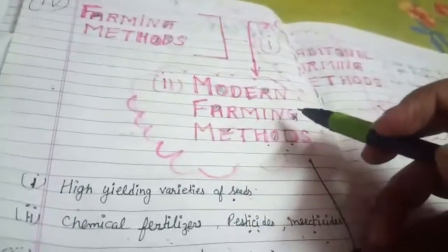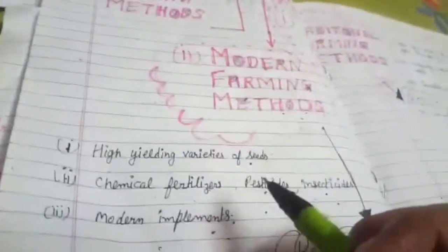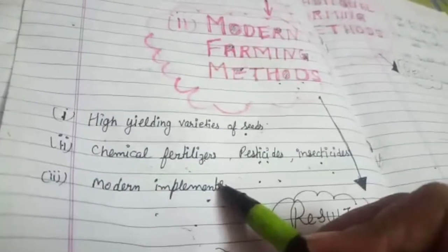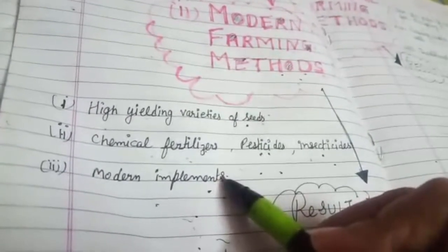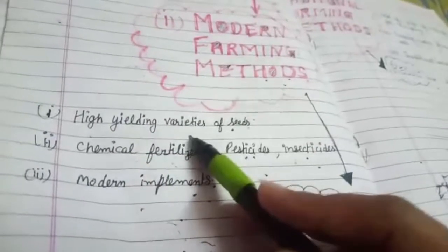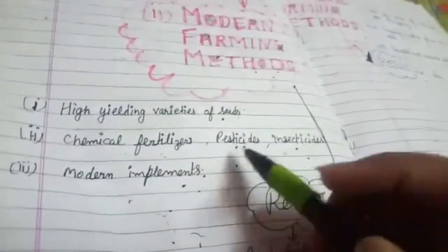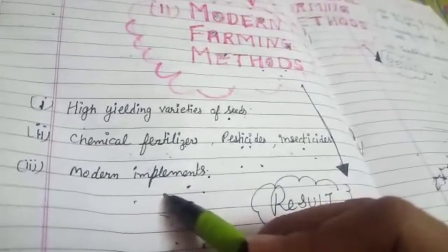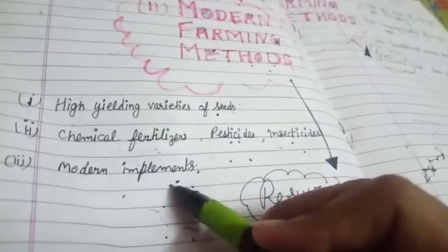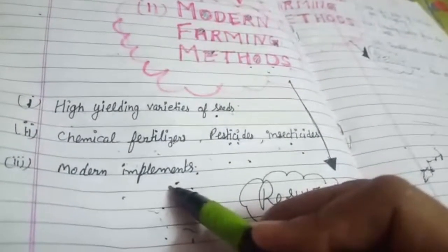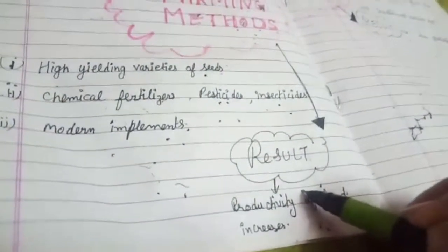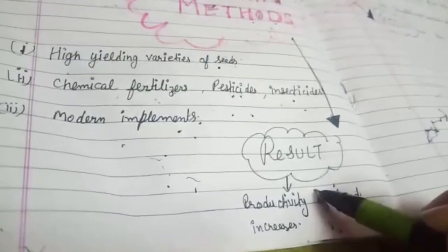Modern farming methods include the use of electricity, machinery, and other sources of energy, as well as irrigation facilities, high yield variety of seeds, chemical fertilizers, pesticides, and insecticides. Tubewells, canals, and other sources of irrigation are used, along with modern implements such as modern machinery and modern tools. As a result, in modern farming methods, the productivity of land increases many folds.